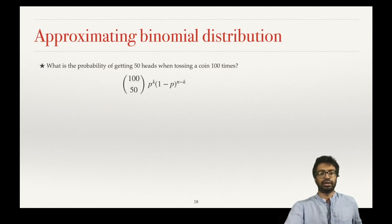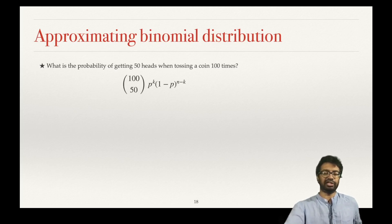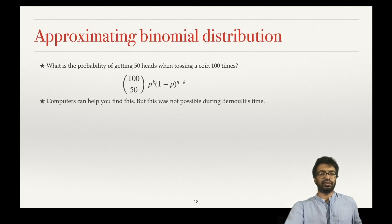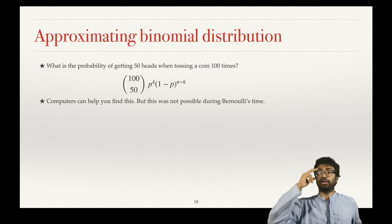We know the answer: it is 100 choose 50, p raised to k, times 1 minus p raised to n minus k. We know the equation, but how do I solve it? You can use your computer to find this, but this was not possible during Bernoulli's time.